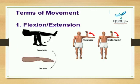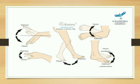In this picture you can see the movement of body parts: flexion and extension of the elbow joint, and flexion and extension of the knee joint. Also shown are flexion and extension of the wrist joint, and flexion and extension of the ankle joint — dorsiflexion and plantar flexion.